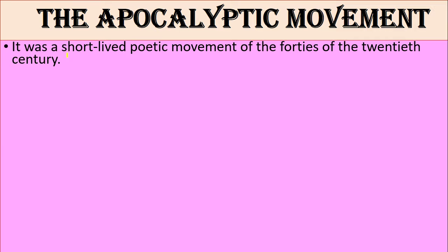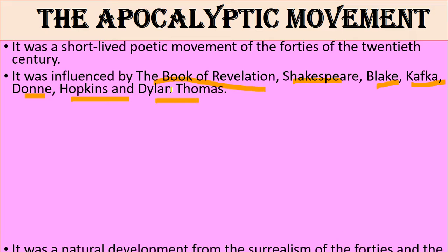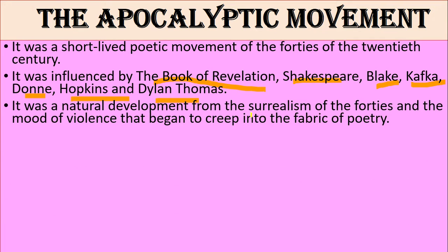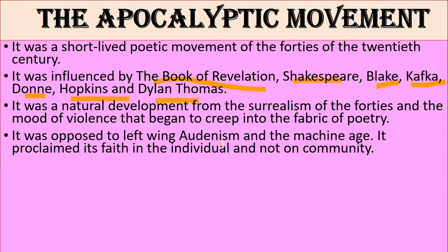The next contemporary movement is the Apocalyptic Movement, which took place in Contemporary English Poetry. It was a short-lived poetic movement of the 1940s of the 20th century. It was influenced by the Book of Revelation, Shakespeare, Blake, Kafka, Hopkins, and Dylan Thomas. It was a natural development from the surrealism of the 40s and the mood of violence that began to creep into the fabric of poetry. It was opposed to left-wing organism and the machine age, and proclaimed its faith in the individual and not the community.